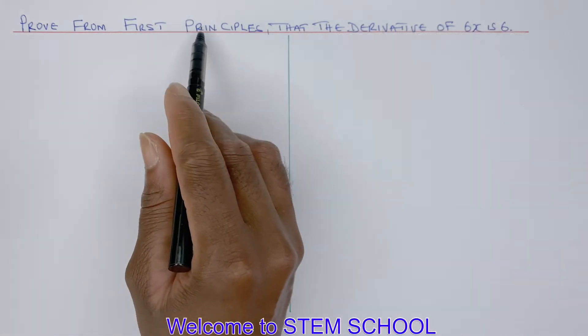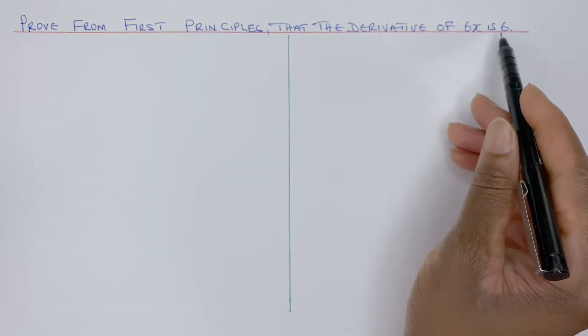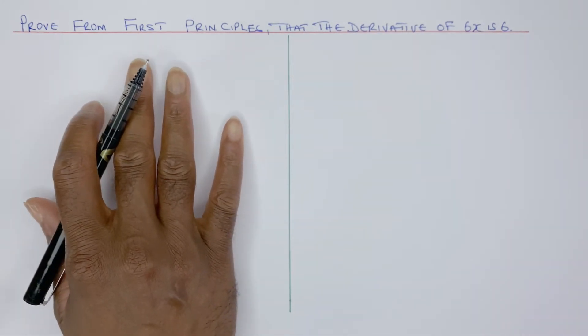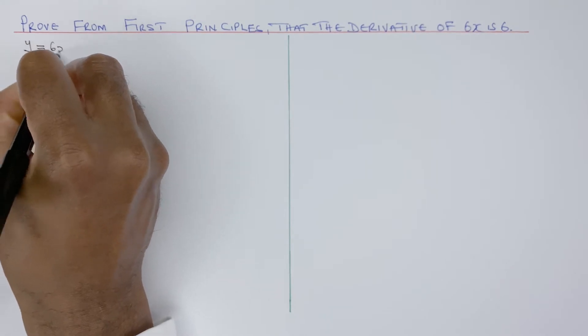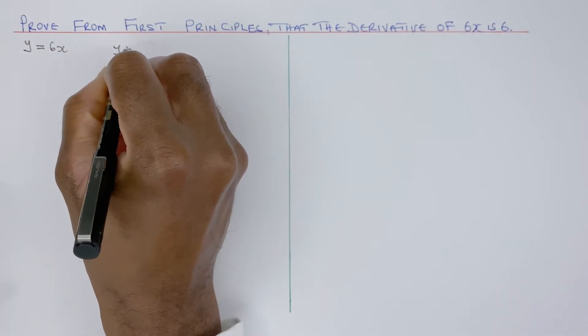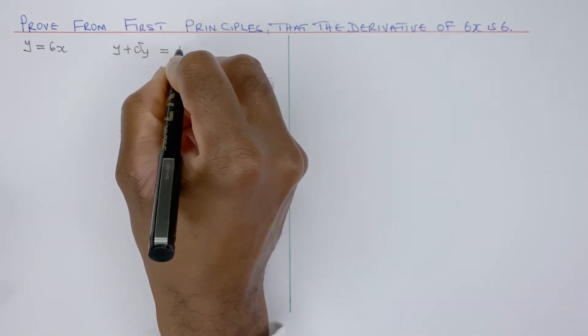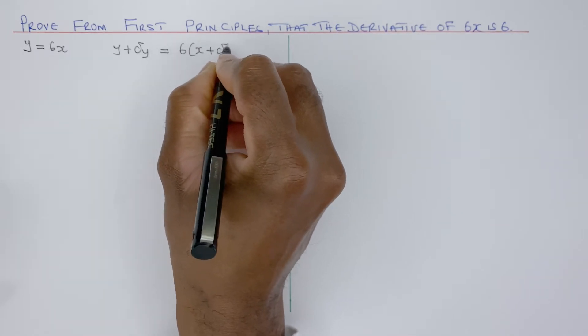Prove from first principle that the derivative of 6x is 6. I'm going to do the first principle using classical method, which is we know that y equals 6x and also y plus delta y equals 6 times x plus delta x.